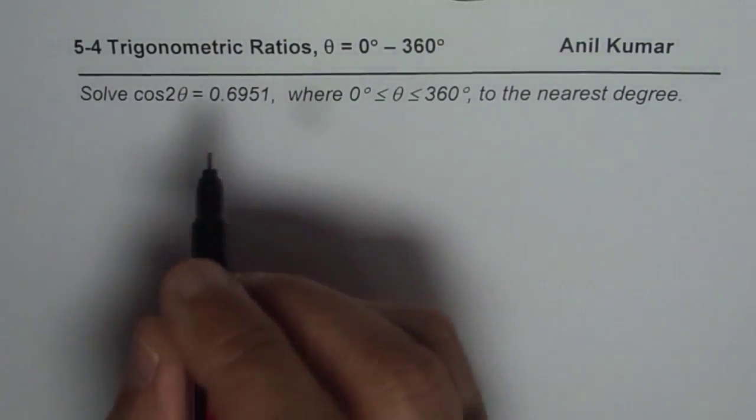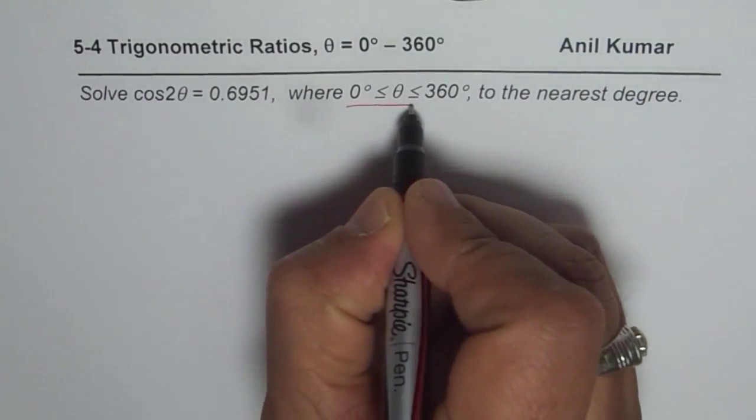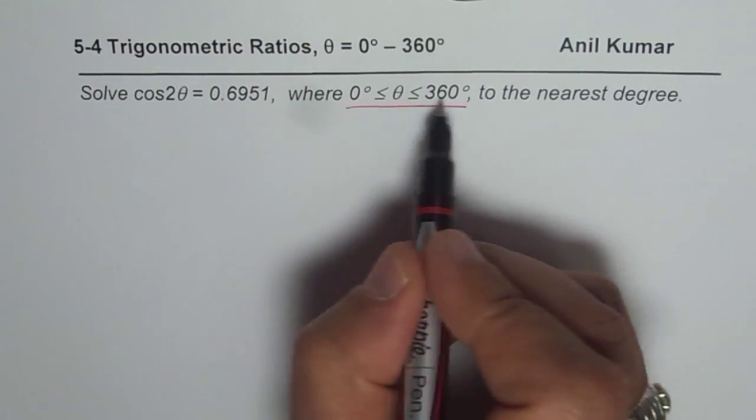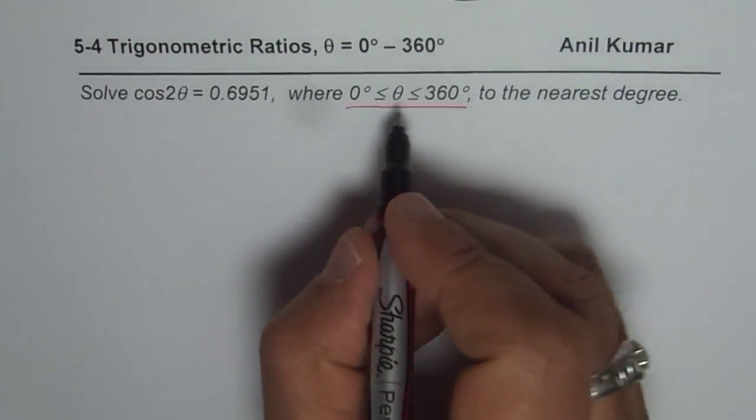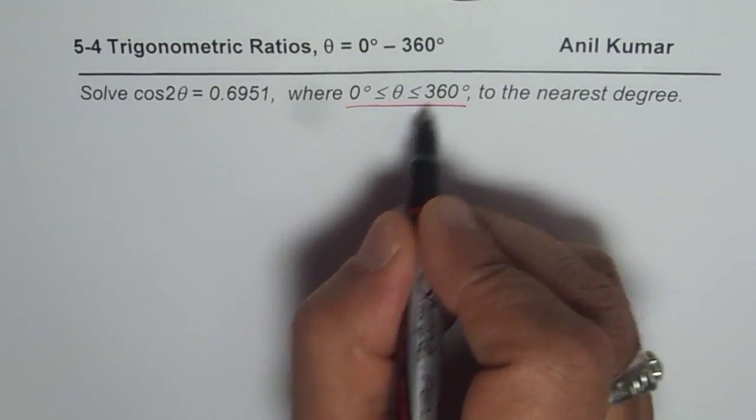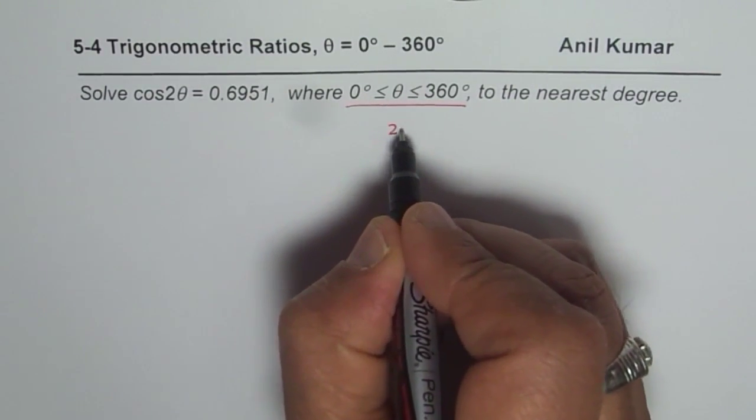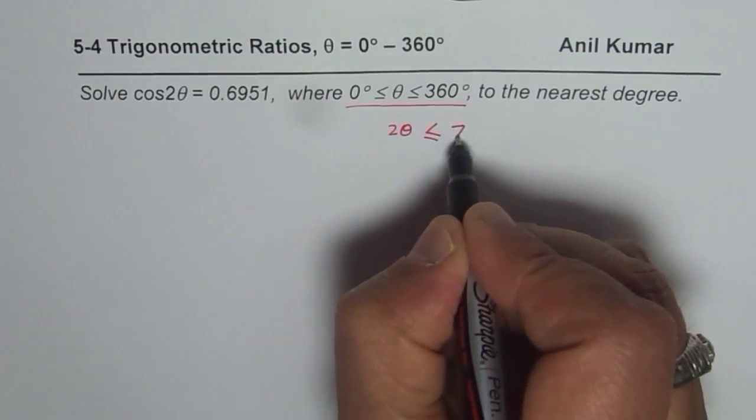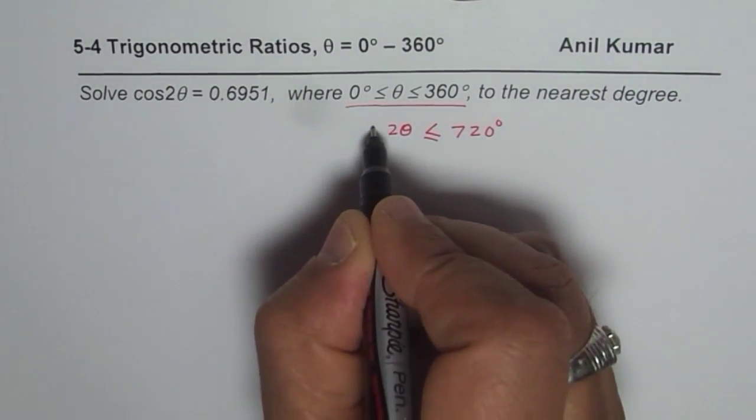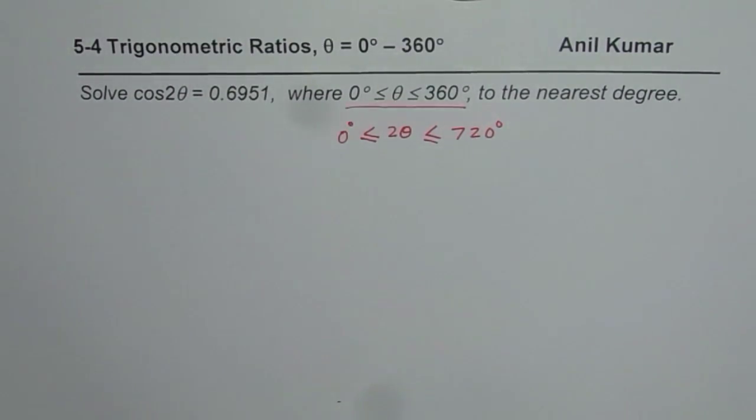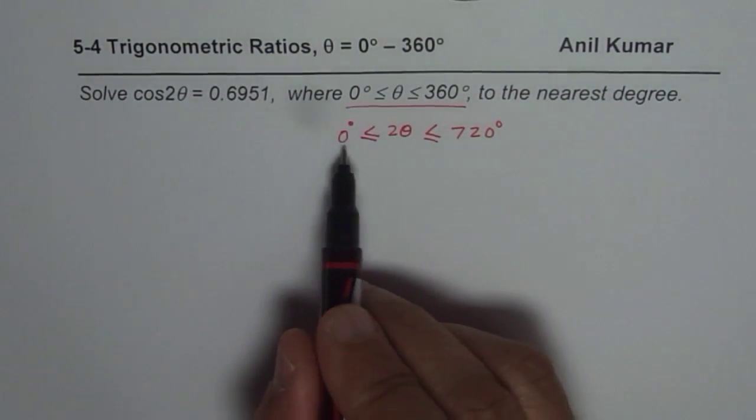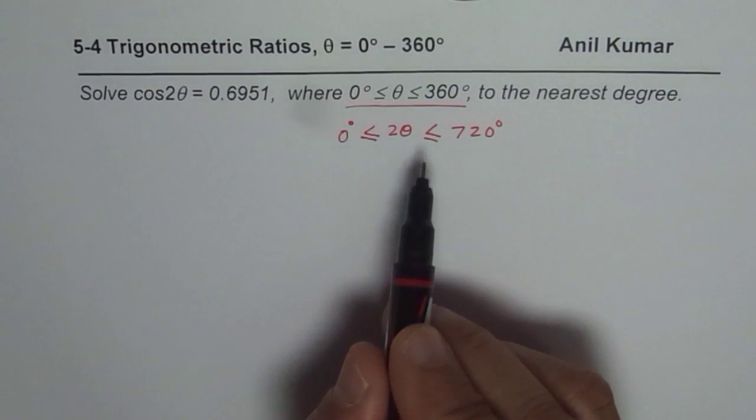Now here is a very interesting thing: we are given what θ is. θ is between 0 to 360 degrees but in the question we have 2θ. So we need to change this domain. If I multiply all of them by 2, I get 2θ is less than or equal to 720 degrees and is greater than or equal to 0 degrees. So that is how my domain for 2θ changes. This is the very first and the most important step which you need to consider.